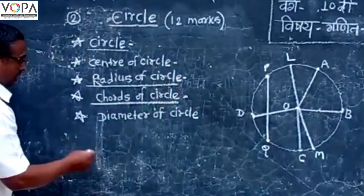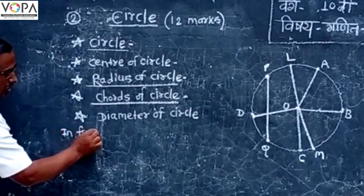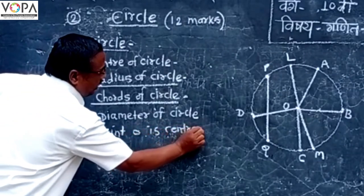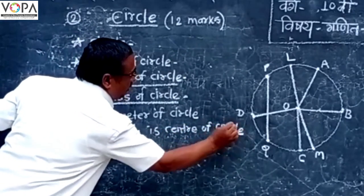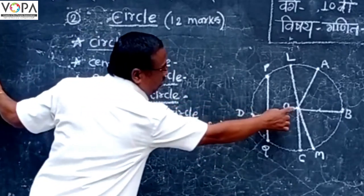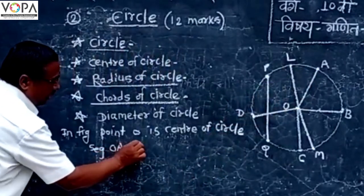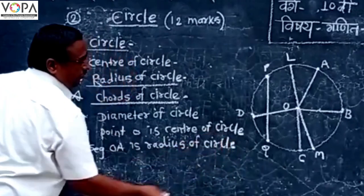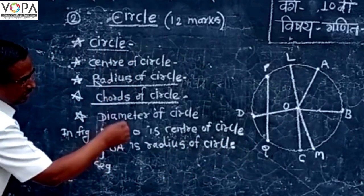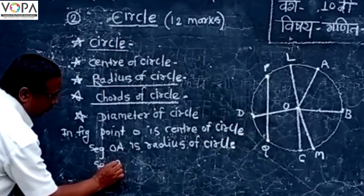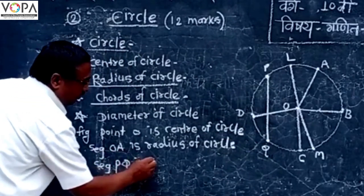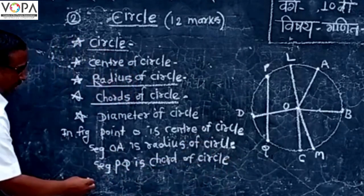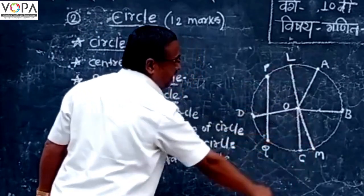From the figure, point O is the center of the circle, segment OA is the radius of the circle, segment PQ is the chord of the circle, and segment LM is the diameter of the circle.